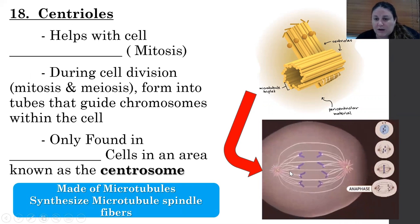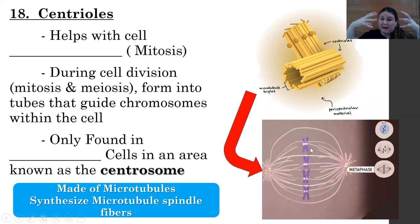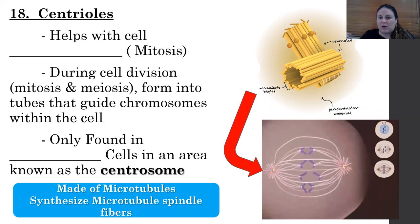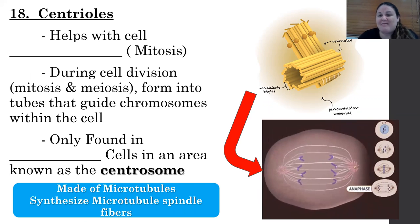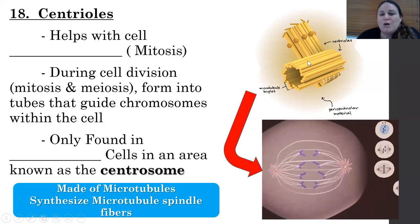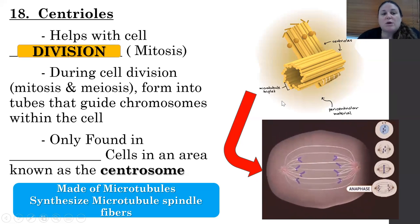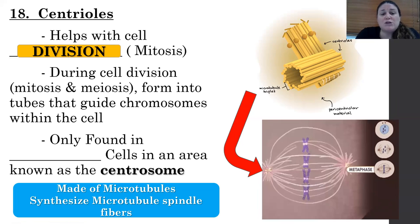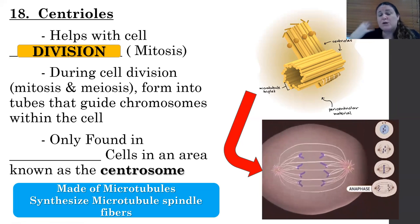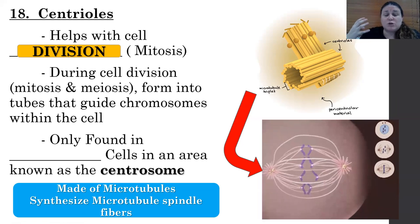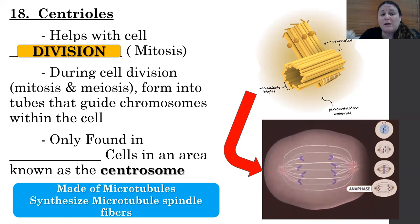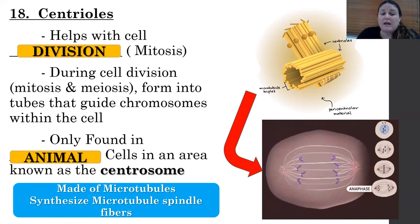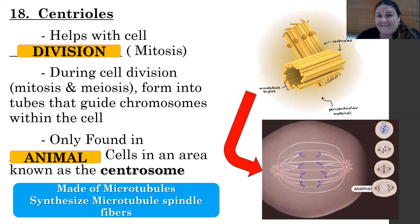Microtubules also cause cell division to happen. The structures that look like spider webs reaching out to grab chromosomes and pull them apart during cell division — those are microtubules. They are made in microtubule organizing centers known as centrioles. Centrioles help with cell division — whether mitosis, making body cells, or meiosis, making sex cells — by making microtubules that guide chromosomes. Centrioles are only found in animal cells, in an area known as the centrosome.